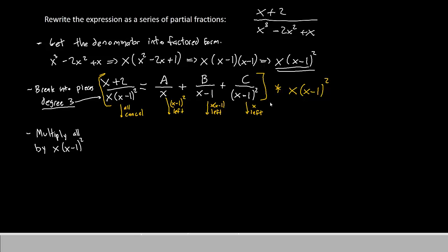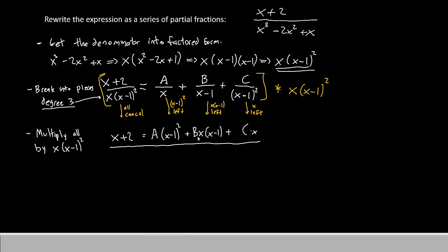With that in mind, here's what's left over. For the first fraction the entire denominator cancels leaving x plus 2. For fraction A, the x cancels but x minus 1 squared remains, giving A times x minus 1 squared. For fraction B, we have B times x times x minus 1. For fraction C, x minus 1 squared cancels leaving just C times x. This is the equation we'll use to solve for A, B, and C.